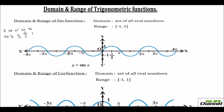You can see this plotted on the graph. When the angle is 0°, sine is 0, so the range starts at 0. At 30° it is 1/2, at 45° it is a bit more, at 60° it goes further, and at 90° the value reaches 1, as marked on the graph.